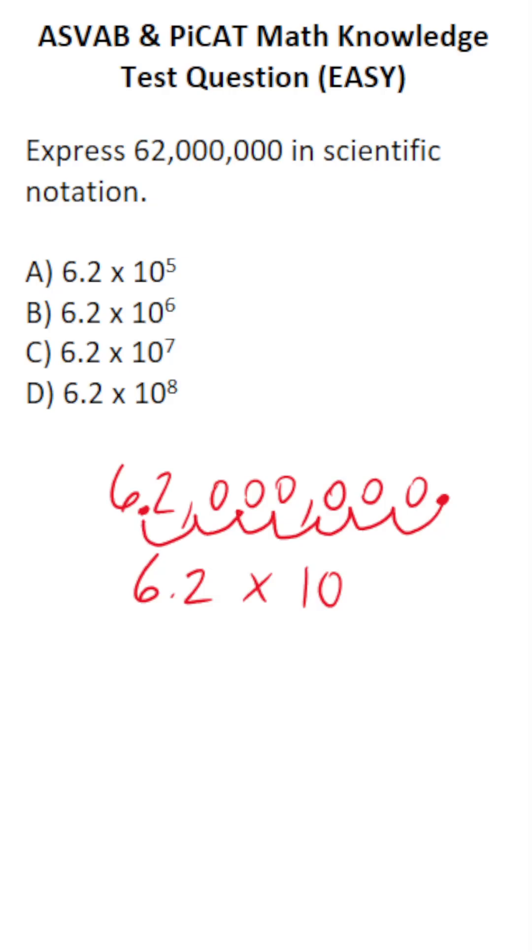So we had to move the decimal place seven times to get the decimal from here to here. So this is 6.2 times 10 to the seventh which is answer choice C.